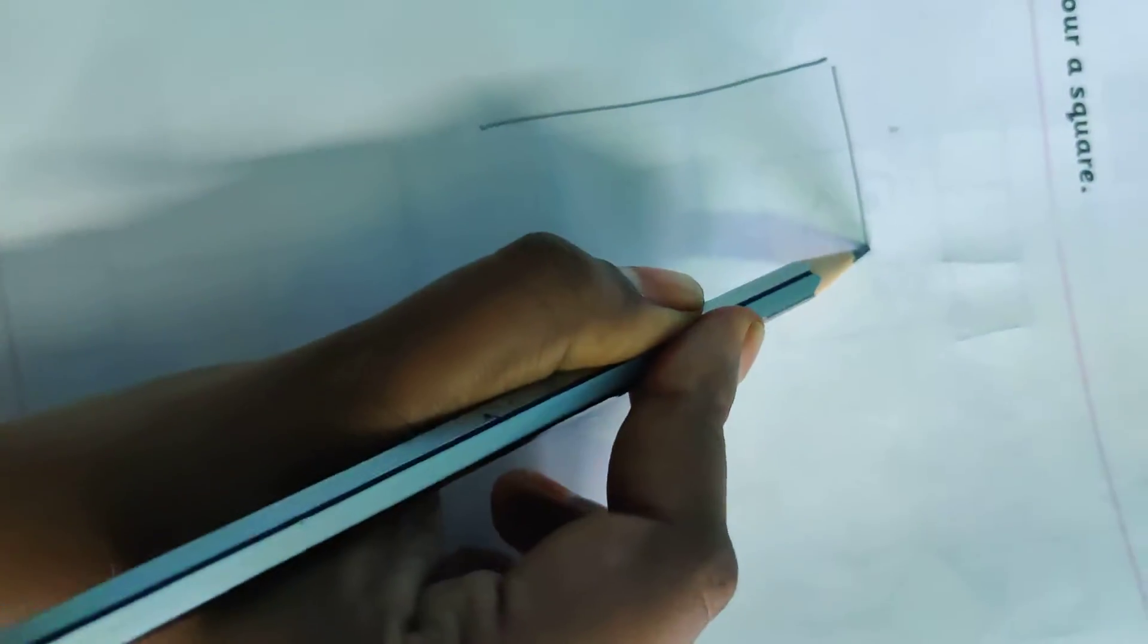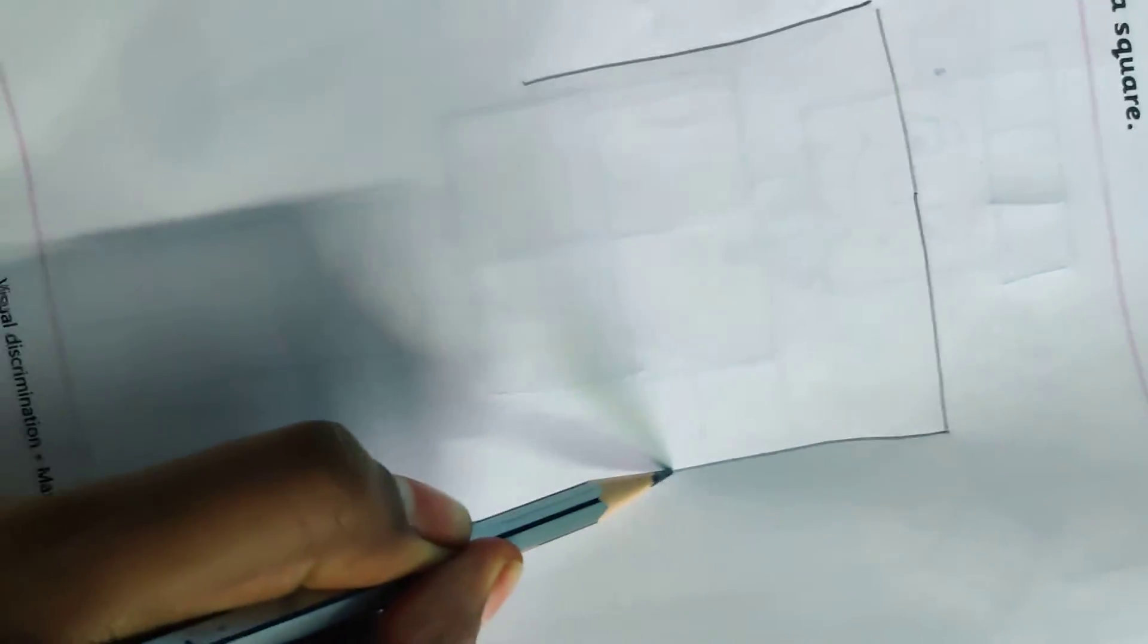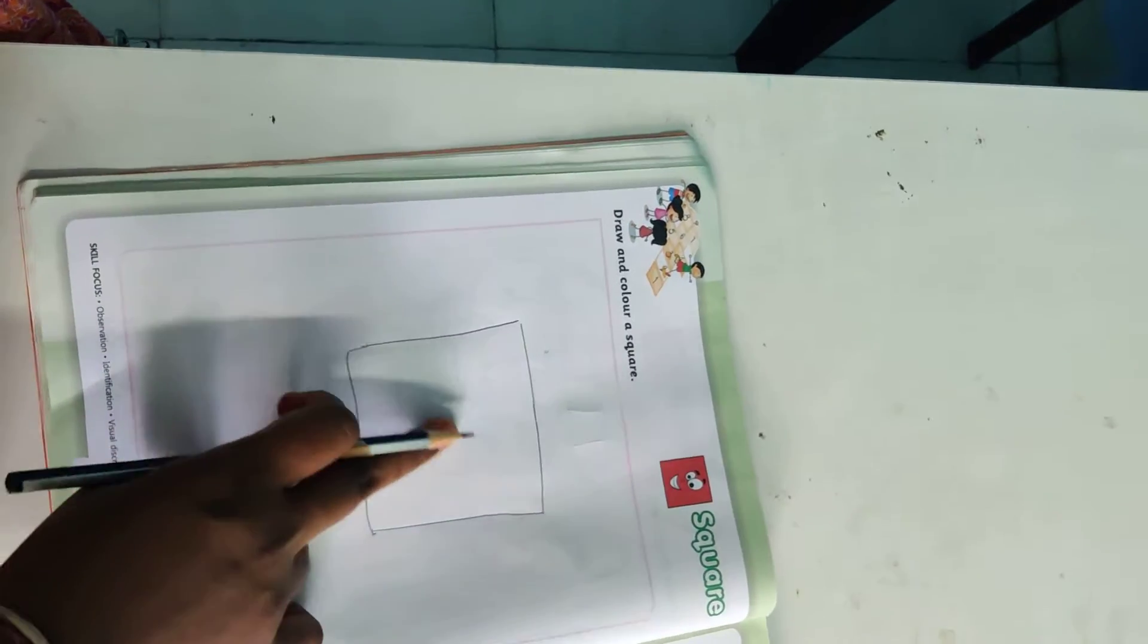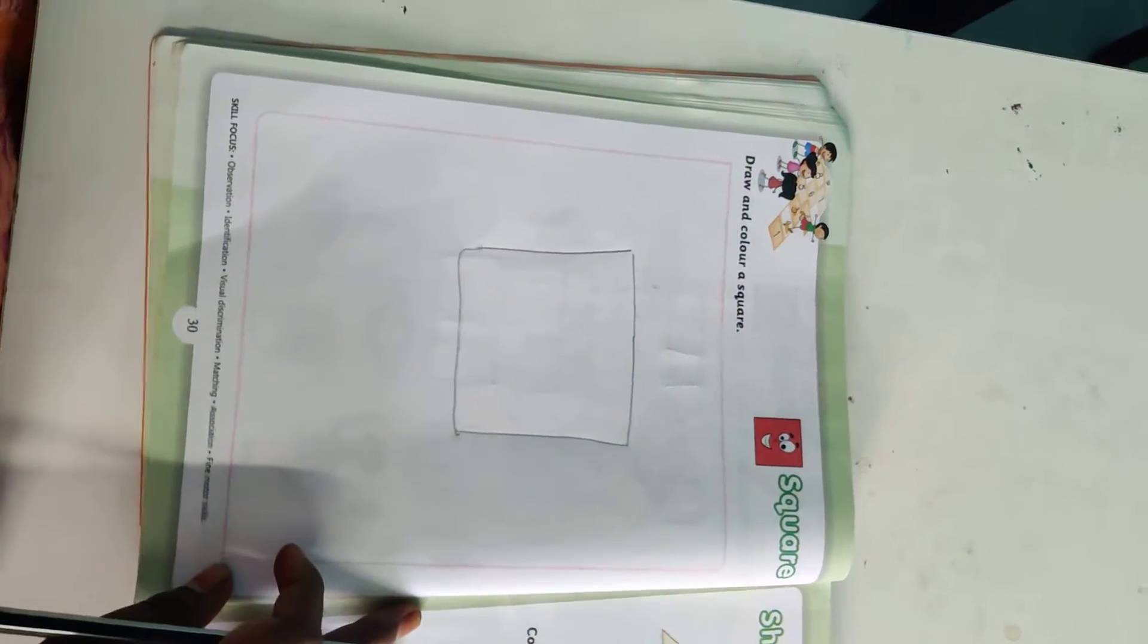Now, here you have to draw a square. So you have to draw a big square. And you have to color it with your favorite colour. Okay, Kutis?